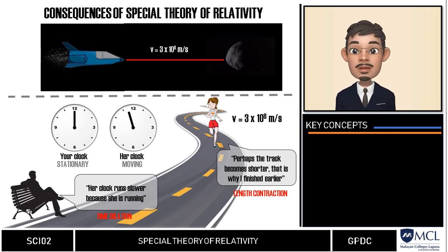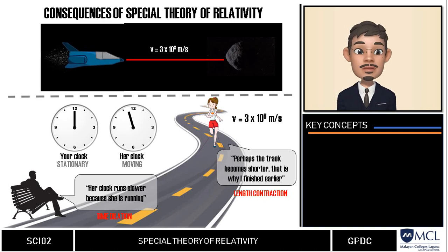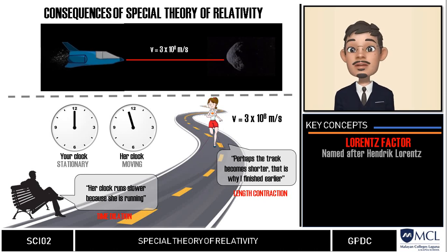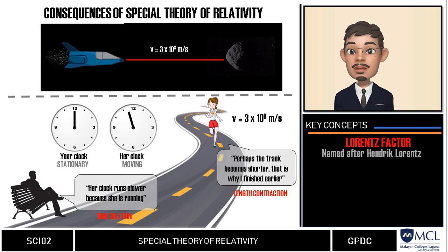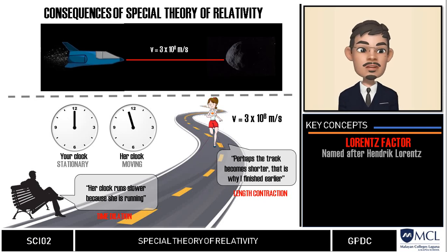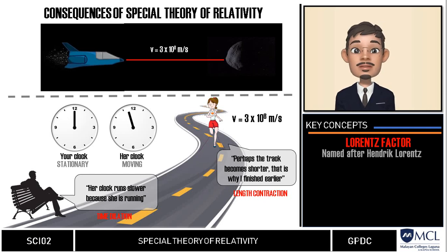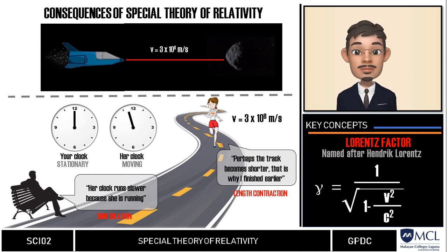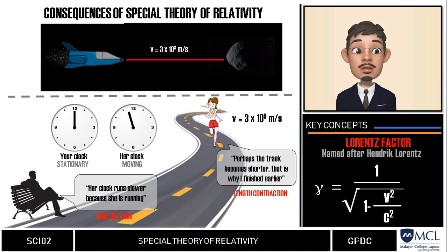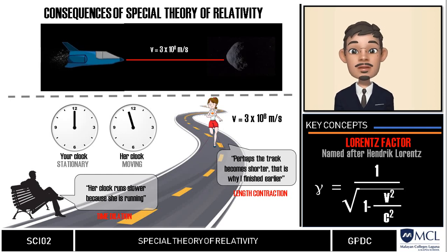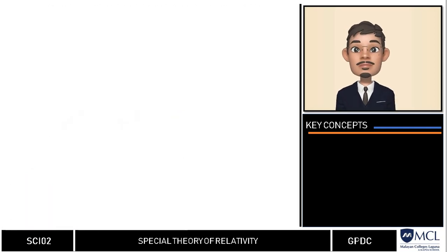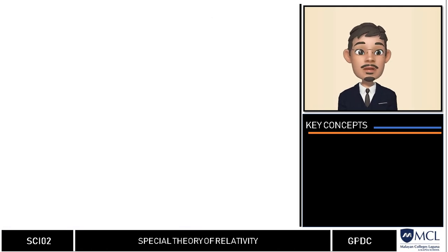The amount of length contraction and time dilation is given by the Lorentz factor, named after Hendrik Lorentz, who had been exploring transformation equations even before Einstein began his work. The Lorentz factor, represented by the Greek symbol gamma, is given by the equation: one over the square root of one minus velocity squared over the speed of light squared.